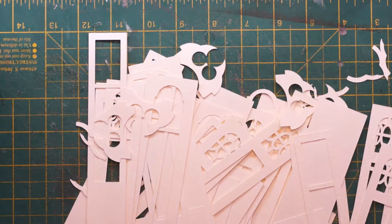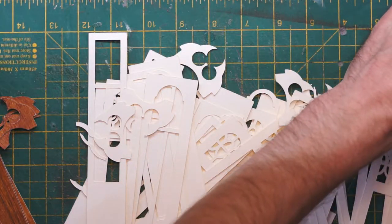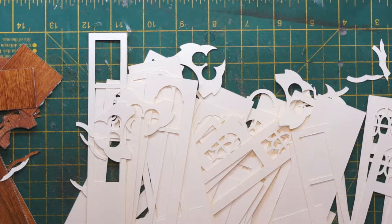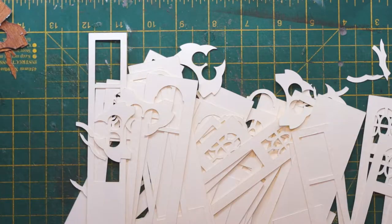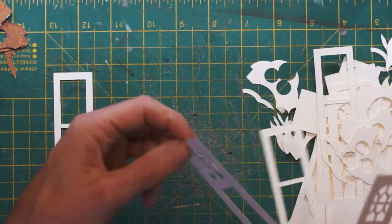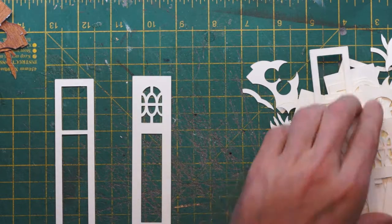So here we are with all our cut out pieces and we've got several copies of the same thing so that we can stack it up and laminate it just like real ply is done. So we'll organize that into various parts and give us some space and we'll start stacking that together.